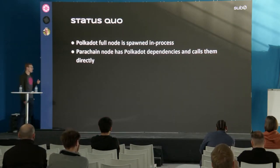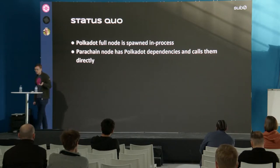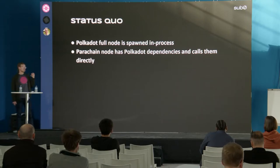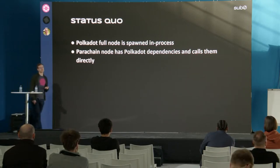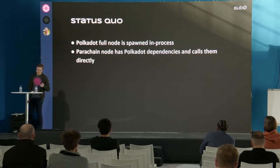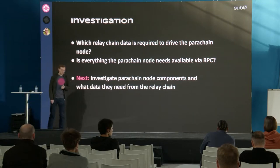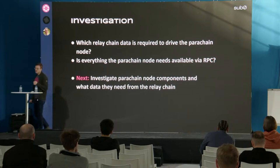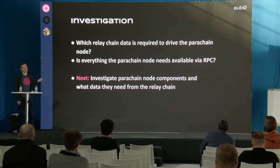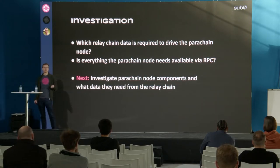In the status quo when I started working on this, we basically had the Polkadot node in-process and from the parachain node inside we were just calling into it like a normal dependency. There was no clear abstraction layer and the boundaries were not super clear. So first we should analyze which components of the parachain node actually use relay chain data — what data do they need, and is it available via RPC so we can easily extract it out?